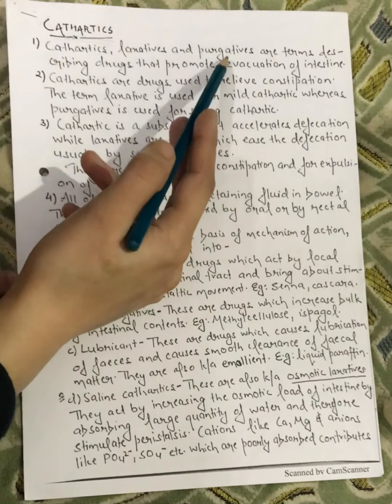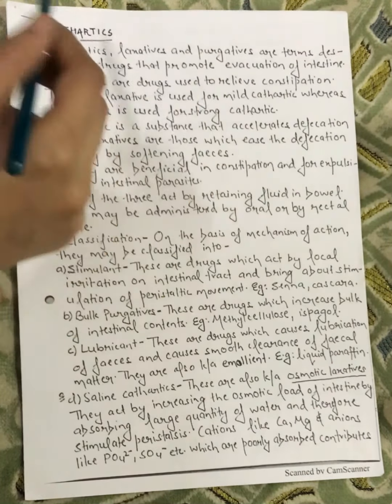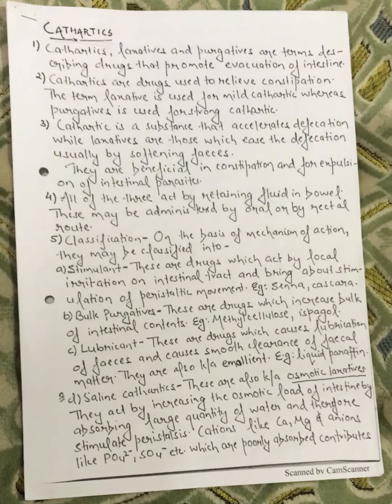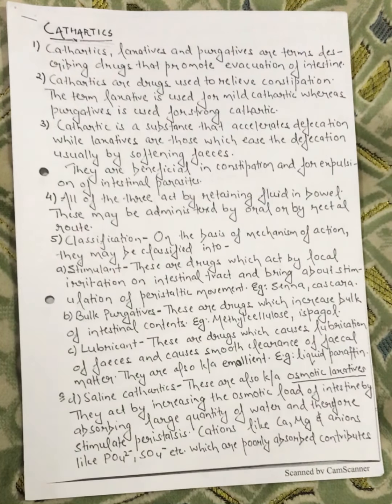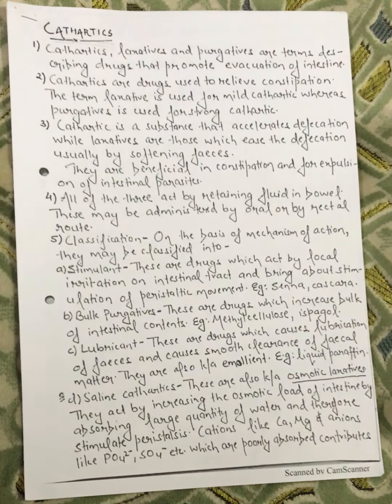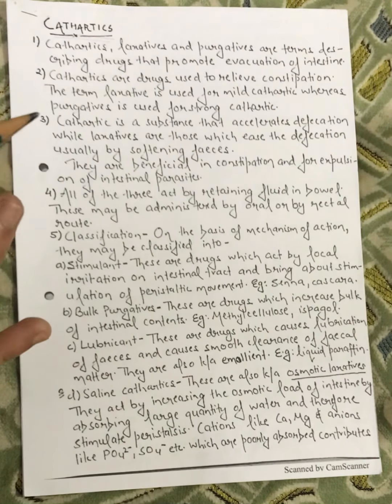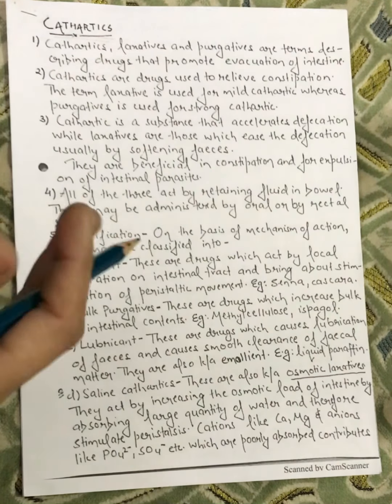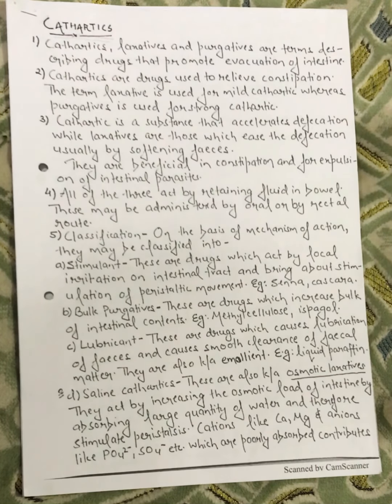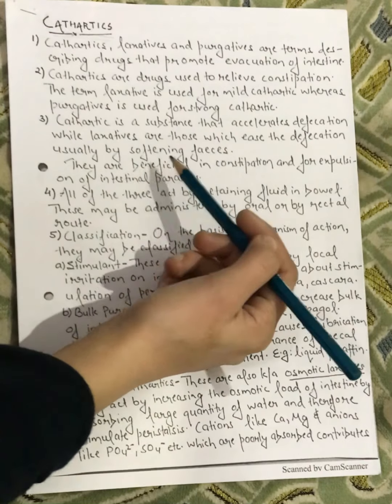Cathartics, laxatives, and purgatives — these three work in our body but with different mechanisms. They are terms describing drugs that promote evacuation of the intestine. Cathartics are the drugs used to relieve constipation. The term laxative is used for a mild cathartic whereas purgative is used for a strong cathartic. A cathartic is a substance that accelerates defecation, while laxatives ease defecation.